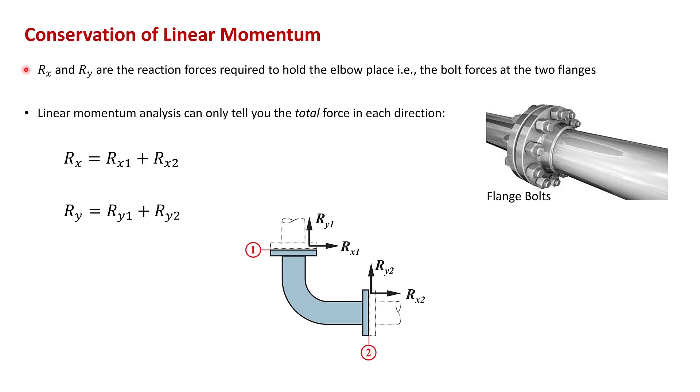So to end, I thought I'd just talk for a moment about the physical meaning of these reaction forces. Rx and ry are the reaction forces required to hold the elbow in place. In practice, these forces would be provided by the flange bolts. But since linear momentum can only tell you the total force in each direction, I've combined the forces at the flanges into a single force in the x direction and a single force in the y direction.